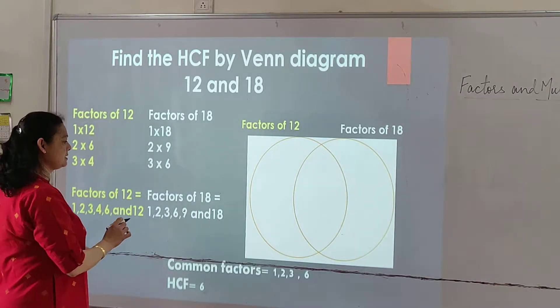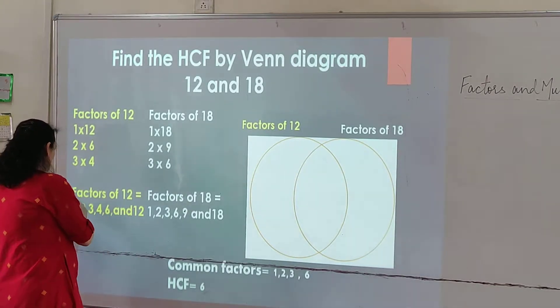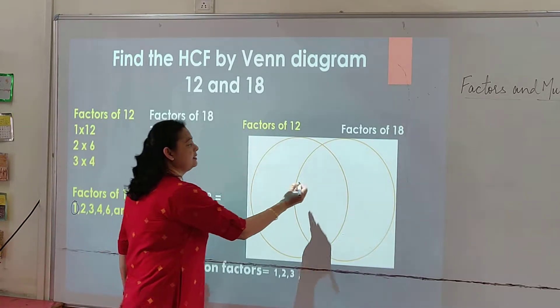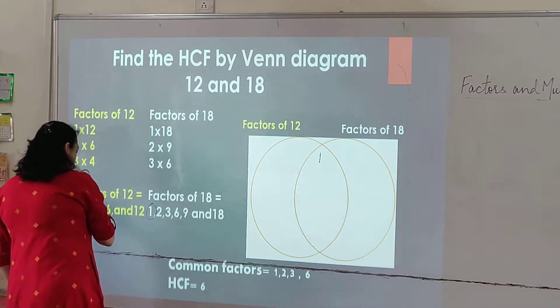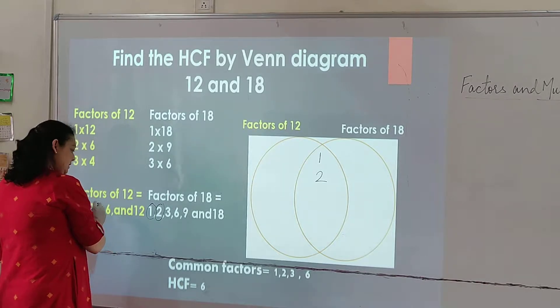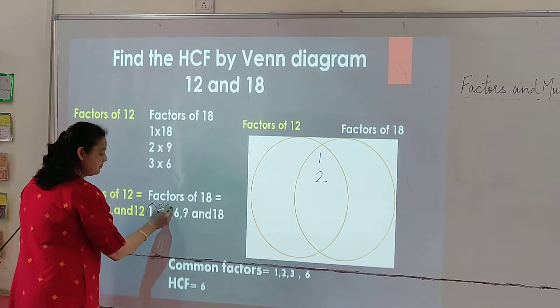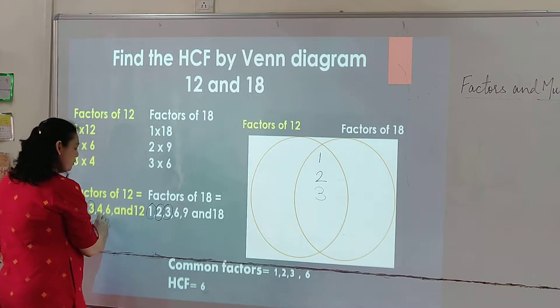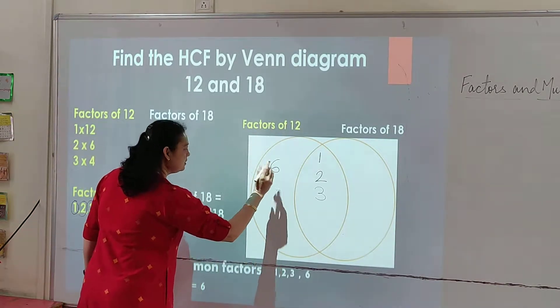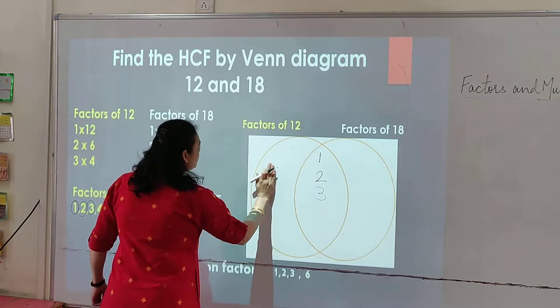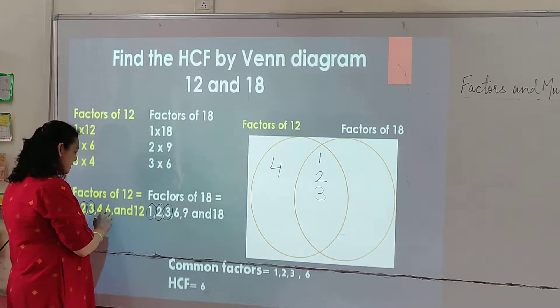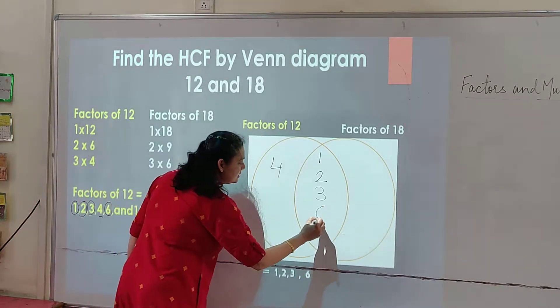So factors of 12 and factors of 18. Let's find out the common factors. The common factors are 1, so we will write it here, then 2, 3 here. 4 is not a common factor, so it will be written in this column.